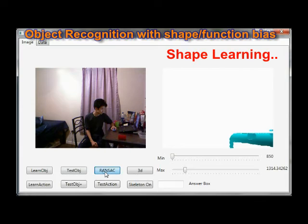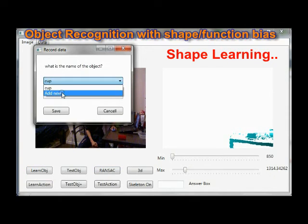As you can see, first it starts with shape learning. User places an object in front of the Kinect, remove the surface using RANSAC algorithm, then name the object.